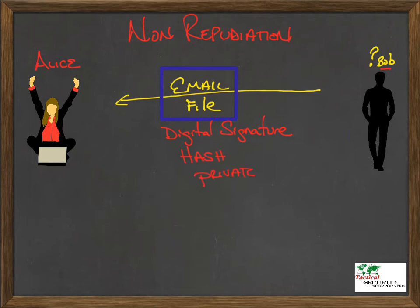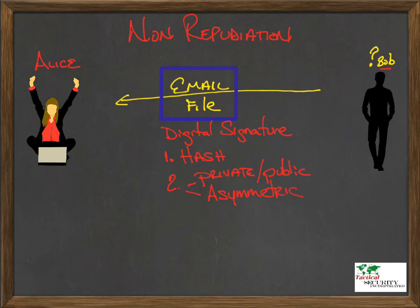Alice would then verify that signature using Bob's public key. So in order for this to work, we're going to have to add hashing algorithms. We're going to have to add asymmetric cryptography. Asymmetric cryptography is where we are going to find these public and private key pairs.